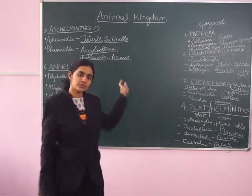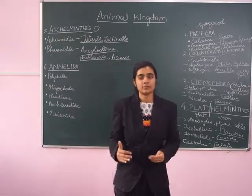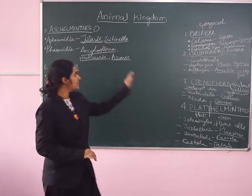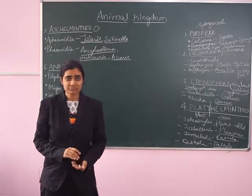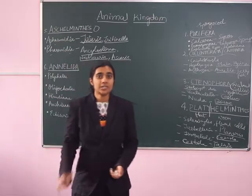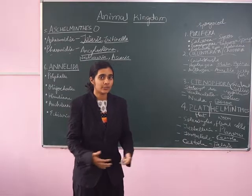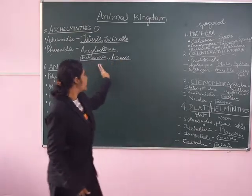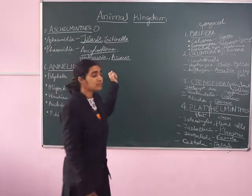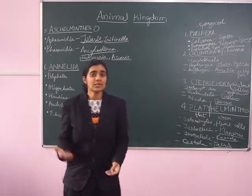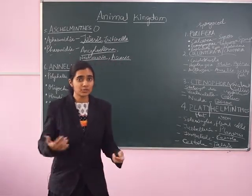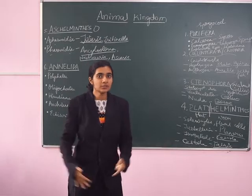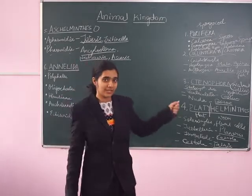Wuchereria, also called the filarial worm — specifically Wuchereria bancrofti, which is native to Africa — causes elephantiasis. In this disease, the limbs of the affected person swell up due to blockage of the lymph nodes in the limbs by Wuchereria worm eggs and worms. Once the lymph nodes are blocked, lymph accumulates as it cannot drain, causing the limbs to look fat and swollen — hence the name elephantiasis.